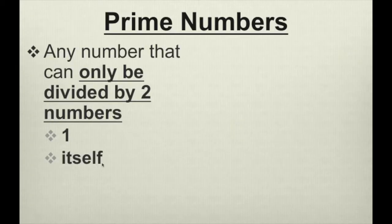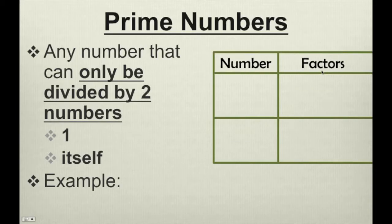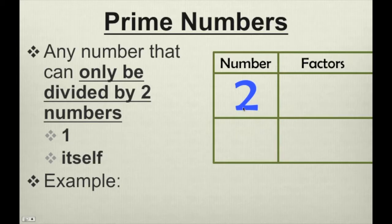Let's take a look at some examples. We'll have the number we're talking about, and we'll list its factors. Let's start with the number 2. What numbers can go into 2 evenly? Only 1 and 2 can go into 2 evenly.